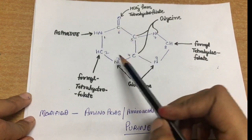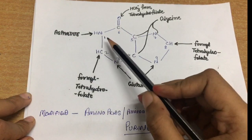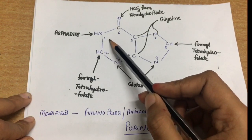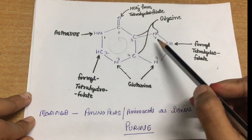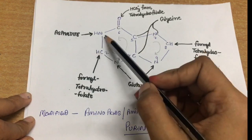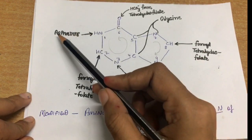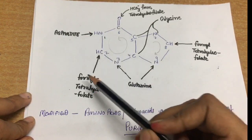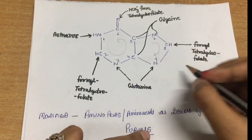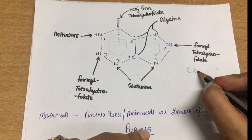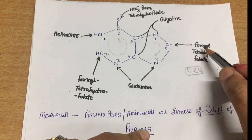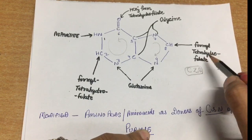This is the structure of the purine ring. The numbering in this ring starts counter-clockwise for the first ring and clockwise for the second ring. The first nitrogen of the first ring is given by aspartate, the second carbon is given by formyl-tetrahydrofolate. Carbon number two and carbon number eight — C2 and C8 — are both given by formyl-tetrahydrofolate.